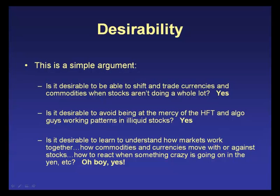Desirability. If you can trade different markets consistently, then when there's nothing going on in stocks but something crazy is happening in currencies, you can take advantage of that rather than sitting there pounding away at something that's not happening. Maybe you can find a market where there's a lot of order flow, a lot of price inefficiencies, a lot of tails, and people buying haphazardly.